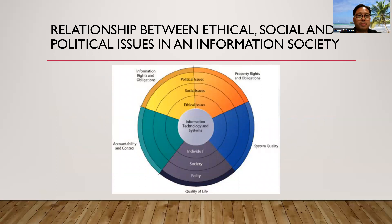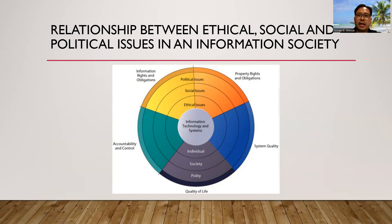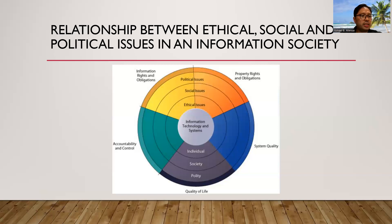The relationship between ethical, social, and political issues in an information society. The political, social, and ethical issues are interconnected. The figure presented illustrates the connections. Introduction of new technology has a ripple effect in the current equilibrium, creating new ethical, social, and political issues that must be dealt with on individual social-political levels. Both social and political institutions require time before developing new behaviors, rules, and laws. For example, a society as a compound, an information technology as a rock drop in a pond, which creates ripples of new situations not covered by old rules. The society and political institutions cannot respond overnight to these ripples. It may take years to develop etiquette, expectations, and laws, which requires understanding of ethics to make choices in legally gray areas.